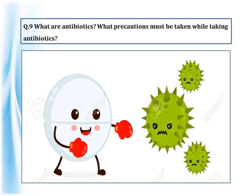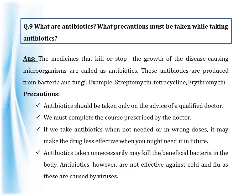Question number nine: what are antibiotics? What precautions must be taken while taking antibiotics? The medicines that kill or stop the growth of disease-causing microorganisms are called antibiotics. These are produced from bacteria and fungi — for example, streptomycin, tetracycline, and erythromycin. Precautions: antibiotics should be taken only on the advice of a qualified doctor, and we must complete the prescribed course. If taken when not needed or in wrong doses, they may become less effective in the future. Antibiotics taken unnecessarily may kill beneficial bacteria in the body. Antibiotics are not effective against cold and flu, which are caused by viruses.